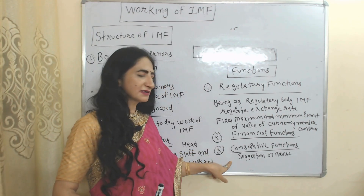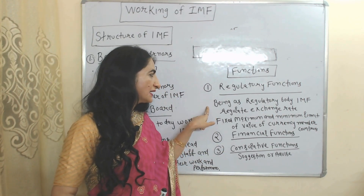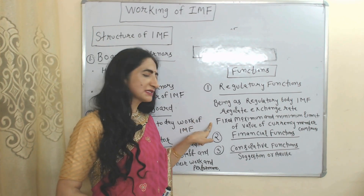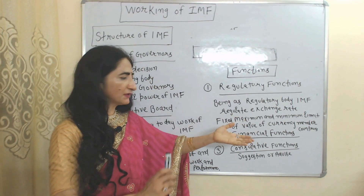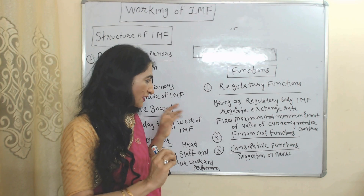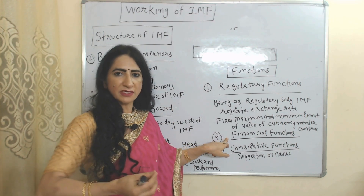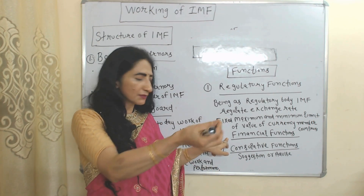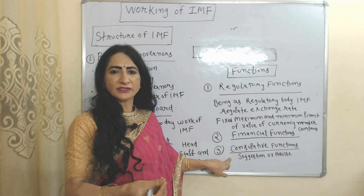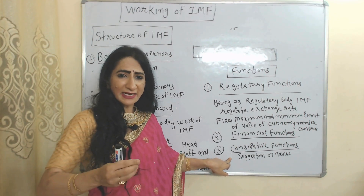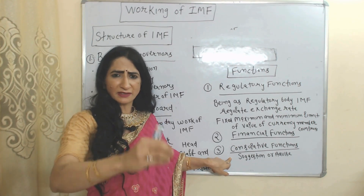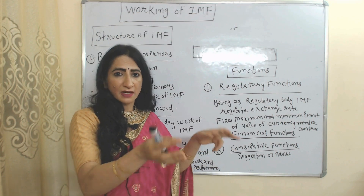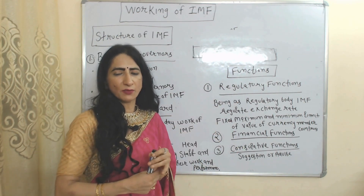IMF functions are mainly divided into three parts. Regulatory function: as a regulatory body, IMF regulates exchange rates — it fixes maximum and minimum limits of the value of currency of member countries. Financial function: IMF provides credit facilities and short-term and medium-term loans to member countries. Consultative function: whenever a member country faces any financial crisis or international trade-related issue, IMF provides advice or suggestions.